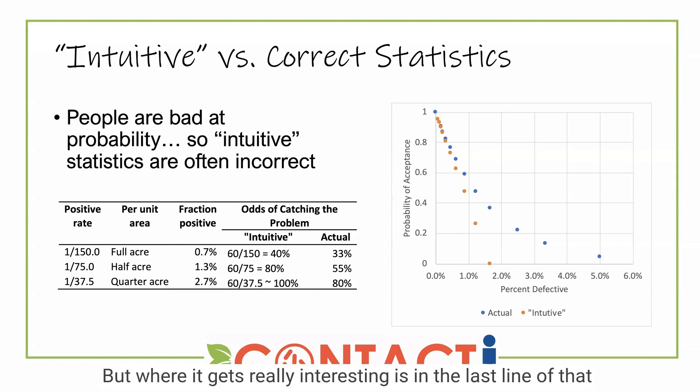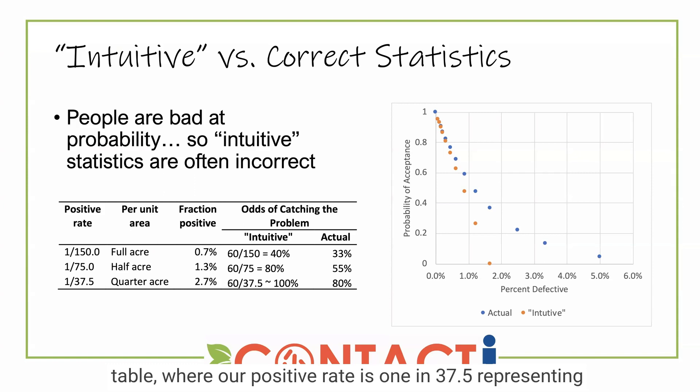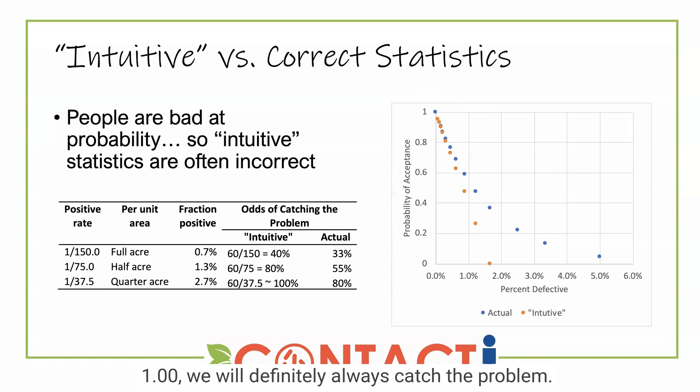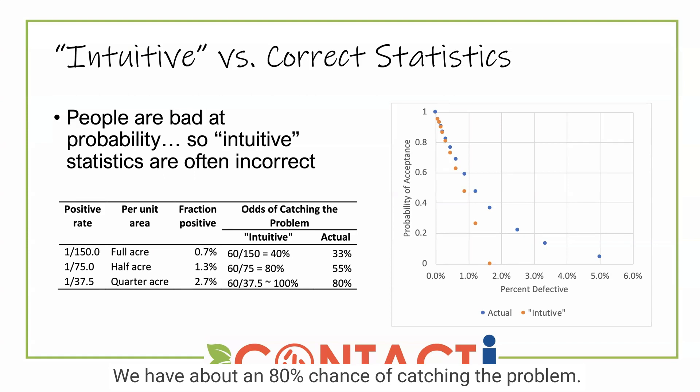But where it gets really interesting is in the last line of that table, where our positive rate is 1 in 37.5, representing a quarter acre, where 2.7 percent of the samples are positive. Here, our intuitive statistics tell us that since 60 divided by 37 is more than 100 percent, we will definitely always catch the problem. And actually, that's not true — we have about an 80 percent chance of catching the problem.